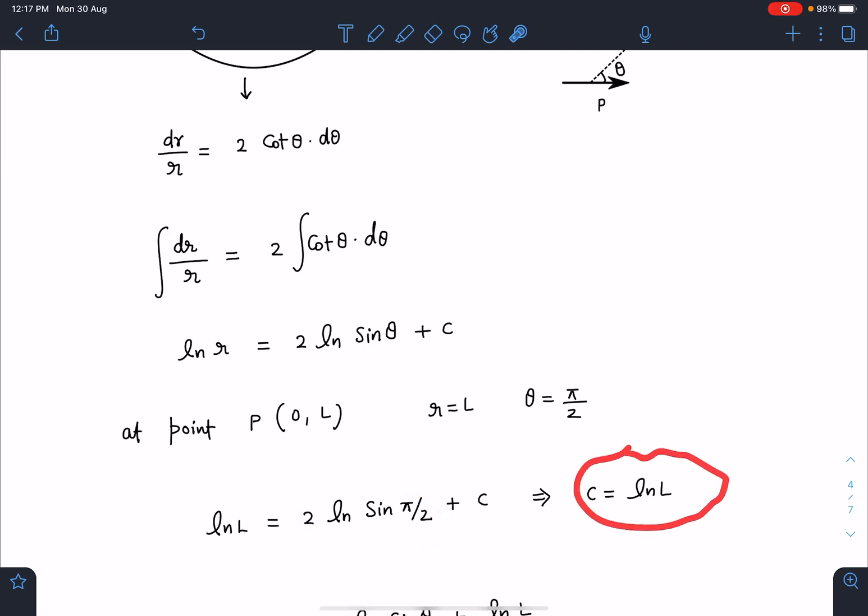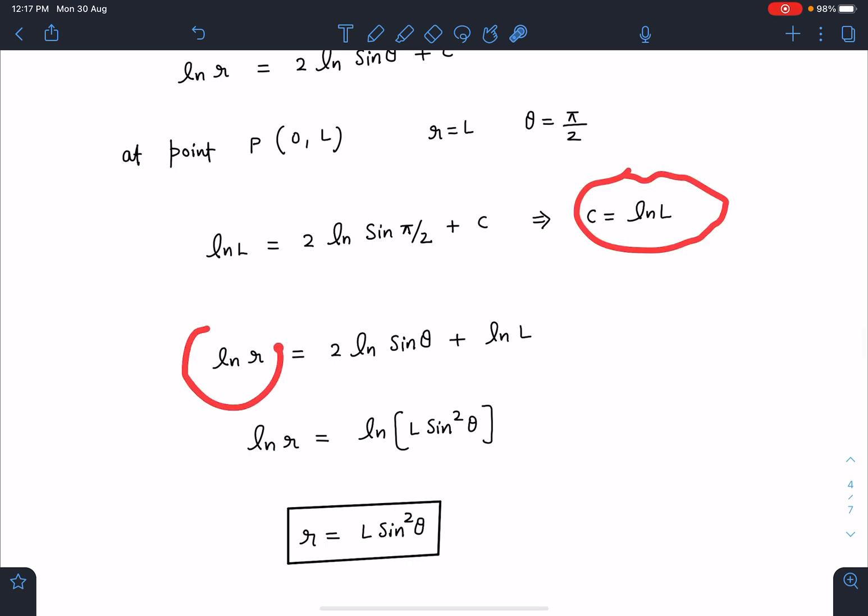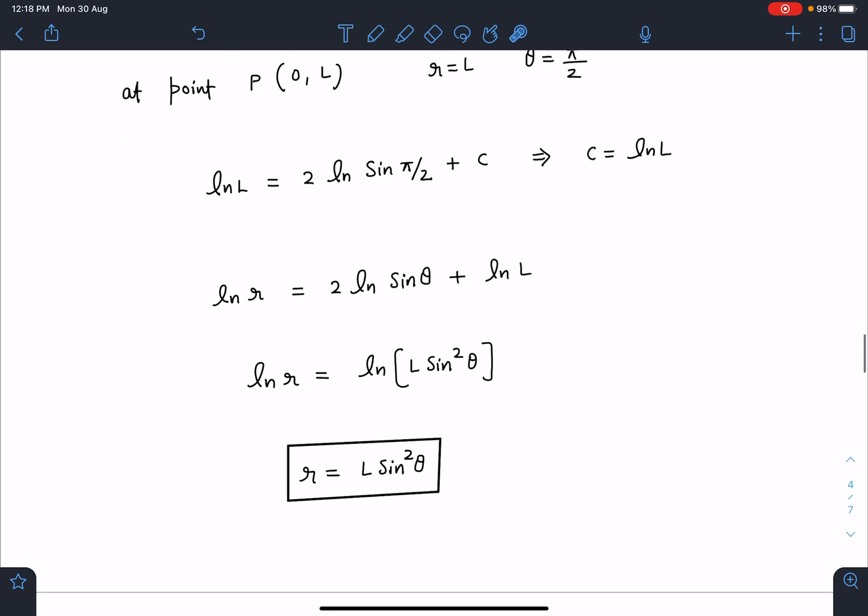If I substitute this in the equation, ln r = 2 ln sin θ + ln L. We can combine: ln r = ln(L sin²θ). Simplifying, r = L sin²θ. This is going to be the equation of the electric field line in polar coordinate system, which is fairly easy and a very nice problem in itself.